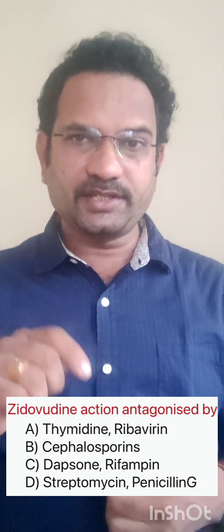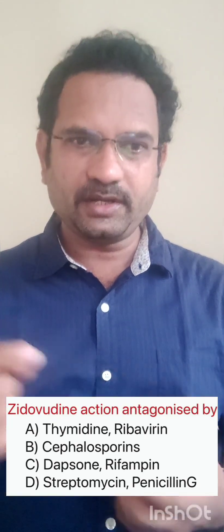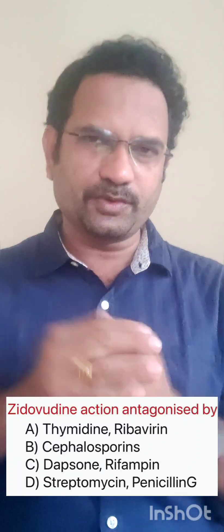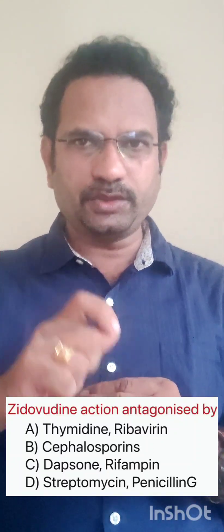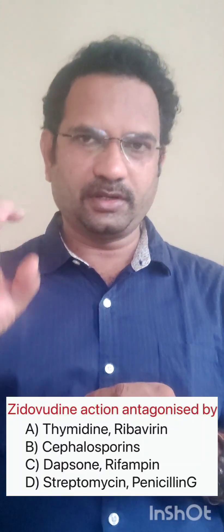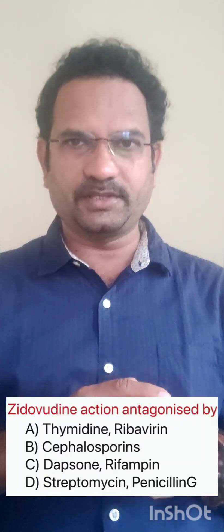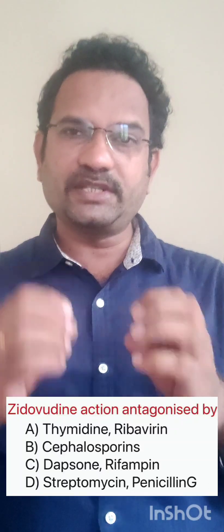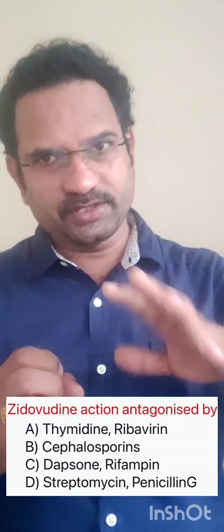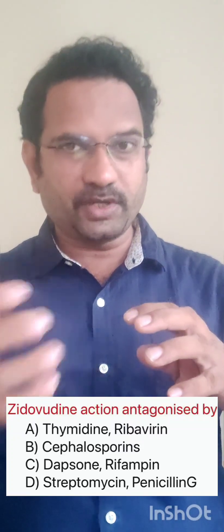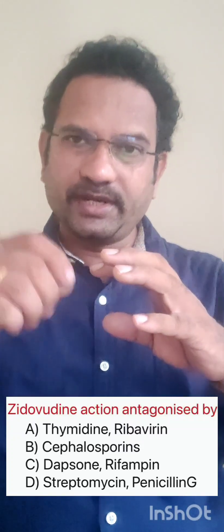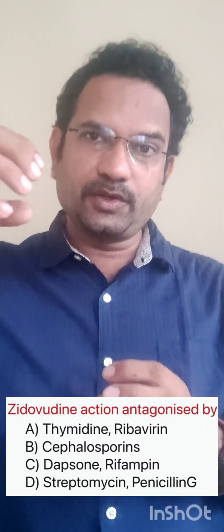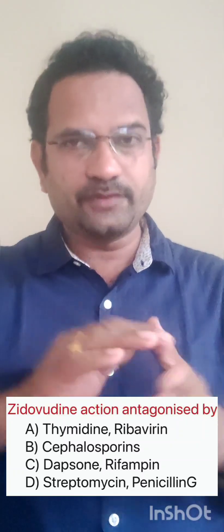Look at the last question. Zidovudine action is antagonized by: thymidine, ribavirin, cephalosporin, dapsone, rifampin, streptomycin, or penicillin G. Zidovudine structurally is azidothymidine — in the thymidine structure, an N3 azido group is attached at the third position of the deoxyribose. When zidovudine is given, it is phosphorylated to a triphosphate analog and incorporated into growing DNA. Because N3 is present at the third position, further chain elongation will not occur, thereby inhibiting DNA growth progression.